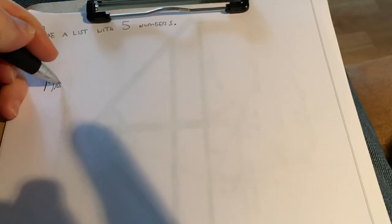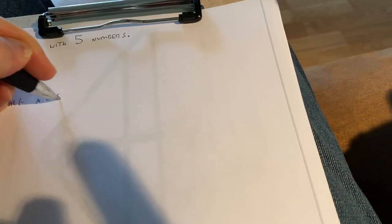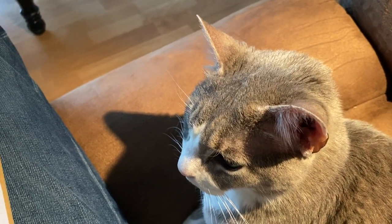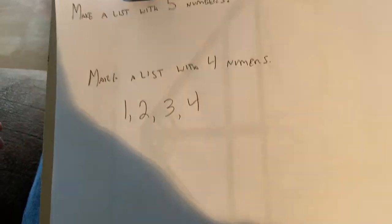Max is going to pass along instructions that say 'make a list with four numbers.' Max doesn't particularly care how that gets done — he's just going to pass that along to someone else. So the list goes away, and when it comes back, the list is 1, 2, 3, 4.